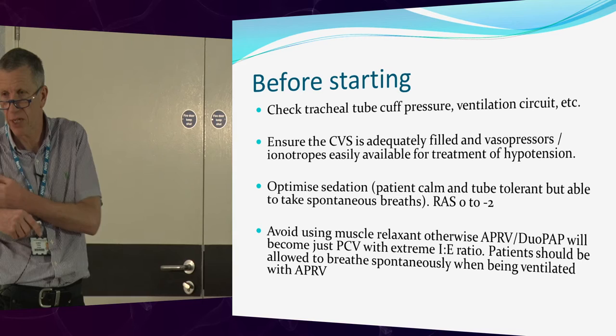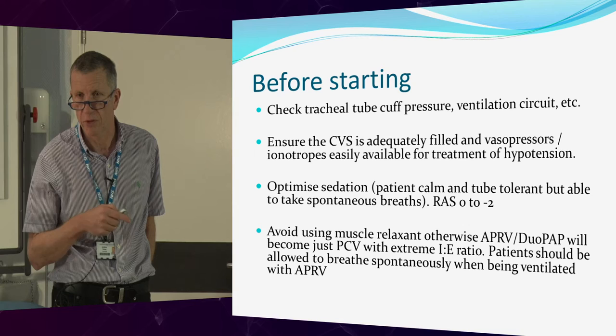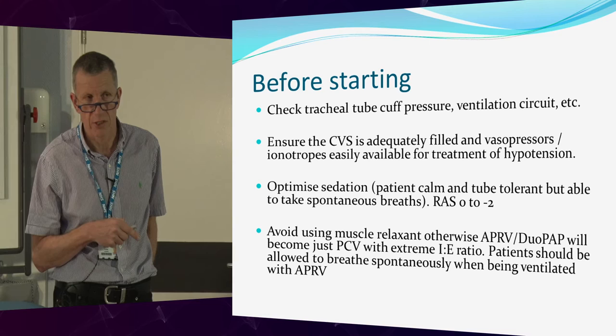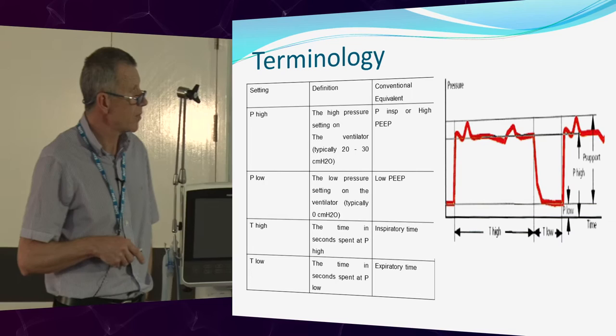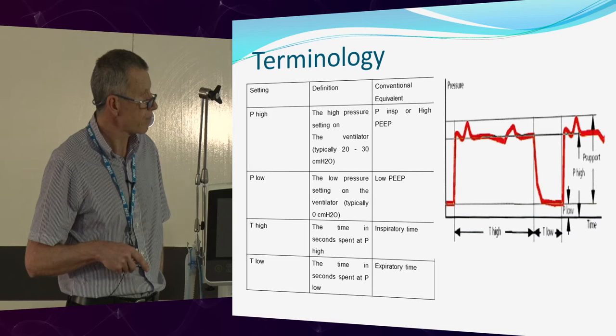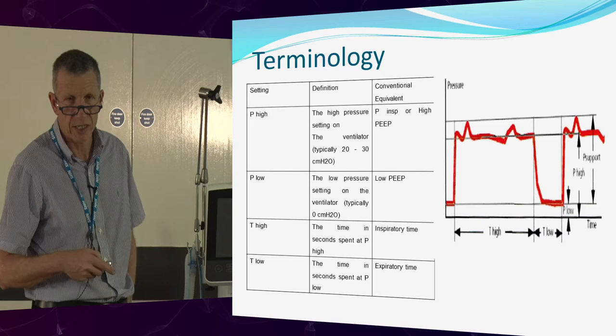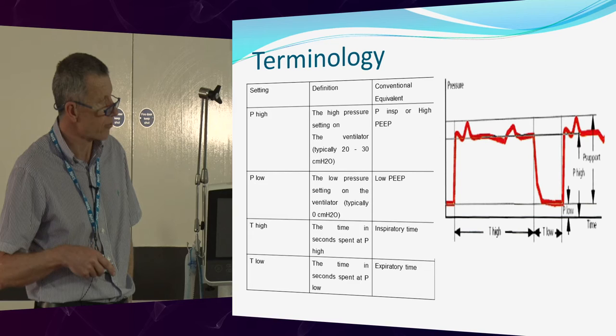Traditionally we always used muscle relaxants with reverse ratio ventilation, which is essentially what APRV is — just an extreme version. We used to put people on two-second inspiration and one-second expiration, but now we're putting them on four-second inspiration and 0.7-second expiration. The terminology's changed a bit: instead of plateau pressure we say P high — set at 30, can be a bit higher. P low set at zero — we don't use PEEP, we use auto-PEEP controlled by having a very short expiratory time, with a very long inspiratory time to recruit all alveoli.